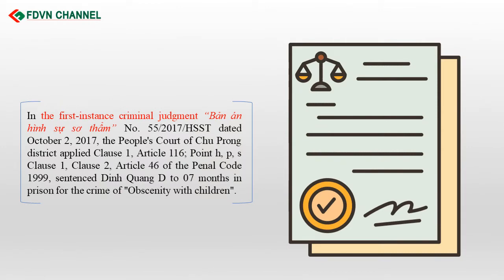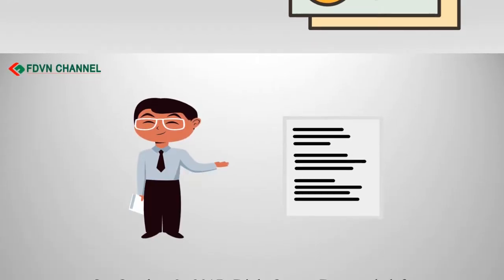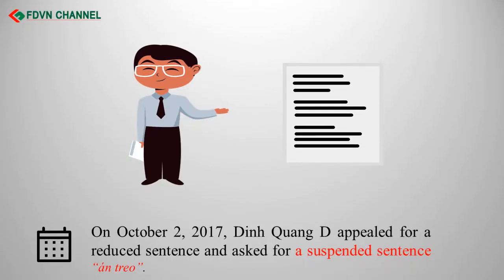In the first instance Criminal Judgment No. 55-2017-HSST dated October 2, 2017, the People's Court of Chu Prong District applied Clause 1, Article 116, Points H, P, S, Clause 1, Clause 2, Article 46 of the Penal Code 1999, and sentenced Din Kuang D to 07 months in prison for the crime of obscenity with children. On October 2, 2017, Din Kuang D appealed for a reduced and suspended sentence.